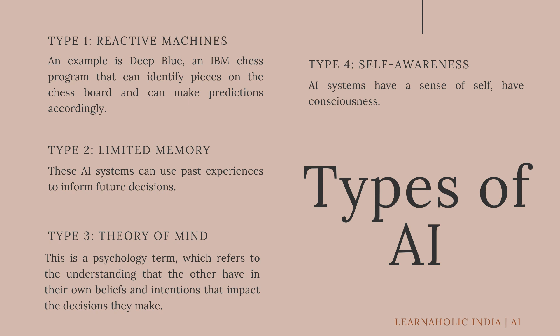The next type is Limited Memory. This type of AI system can use past experiences to inform future decisions. Most of the decision-making functions in autonomous vehicles have been designed in this way.